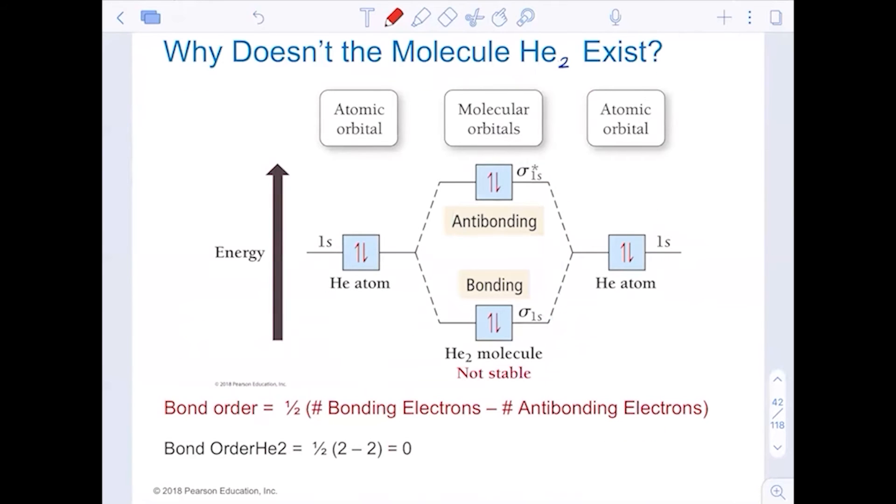So why doesn't He2 exist? Well, I still have the same sigma and the same sigma star, but now I have four electrons, one, two, three, four. So I start at the bottom, one, two, I got to move up into the antibonding orbital. And therefore what I see is the bond order for helium diatomic is zero. So helium diatomic does not exist.